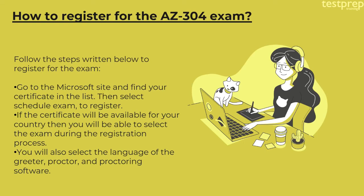How to register for the AZ-304 exam? Follow the steps below to register. First, go to the Microsoft site and find your certificate in the list, then select Schedule Exam to register. Second, if the certificate is available for your country, you will be able to select the exam during the registration process.